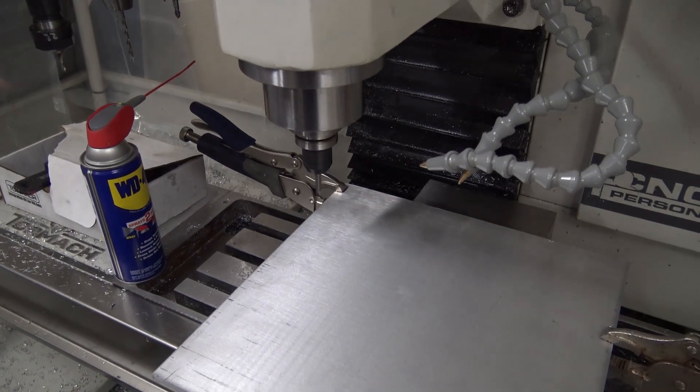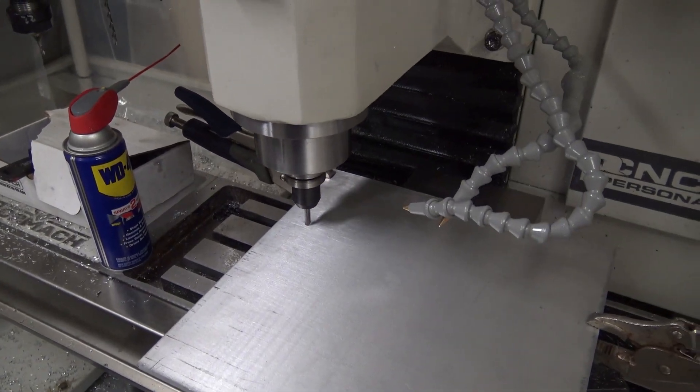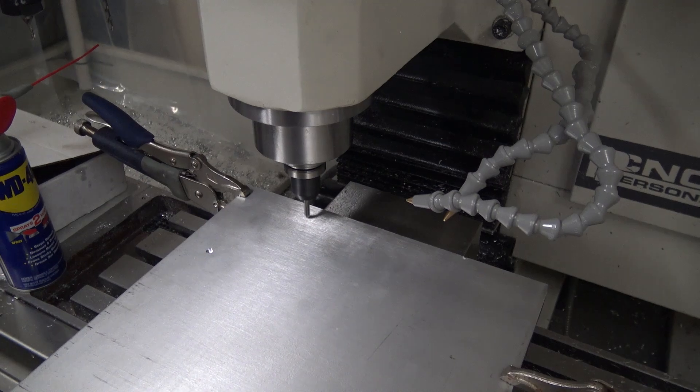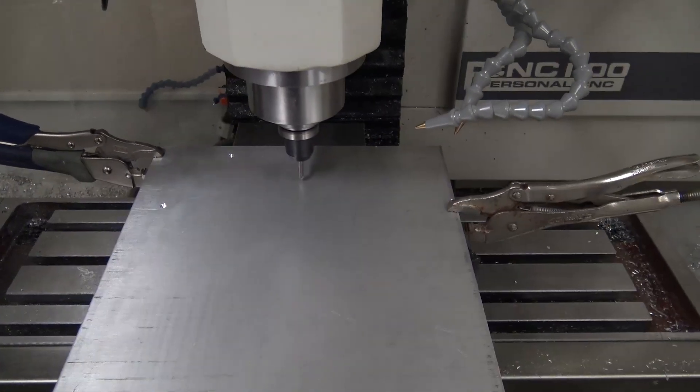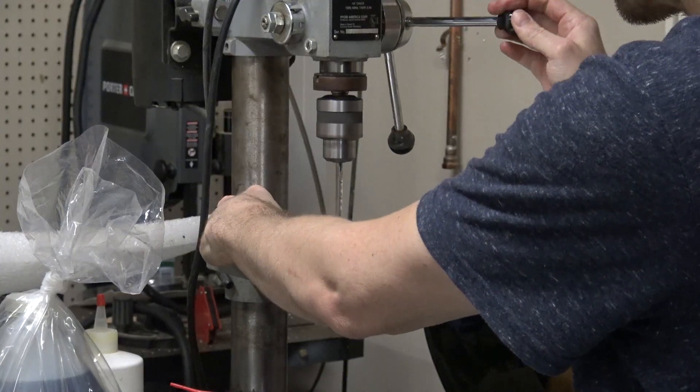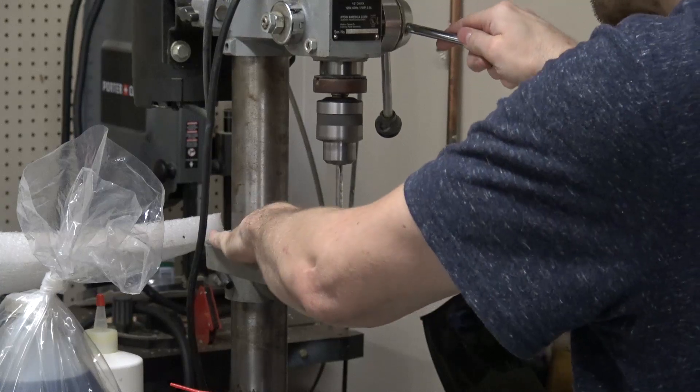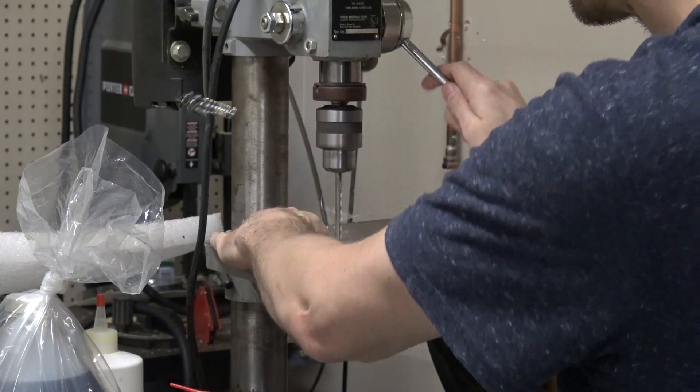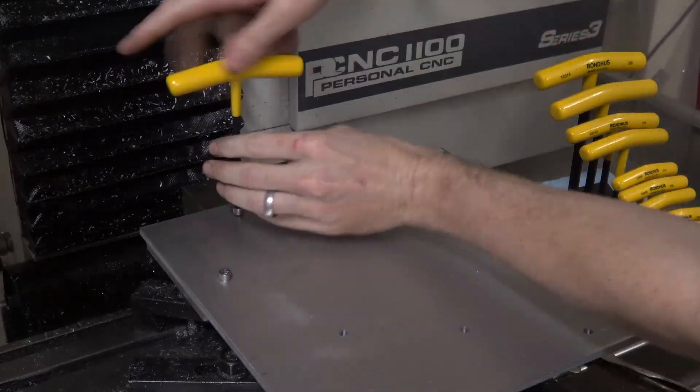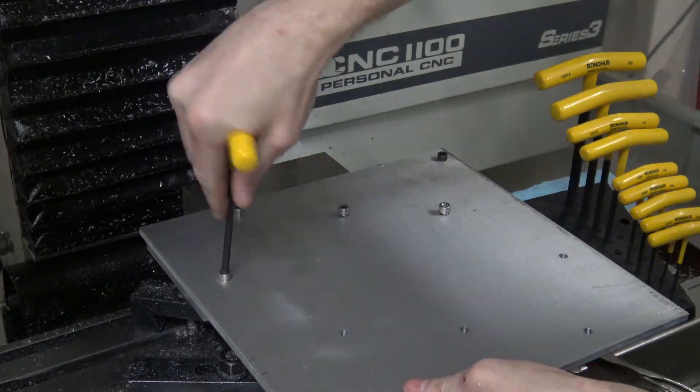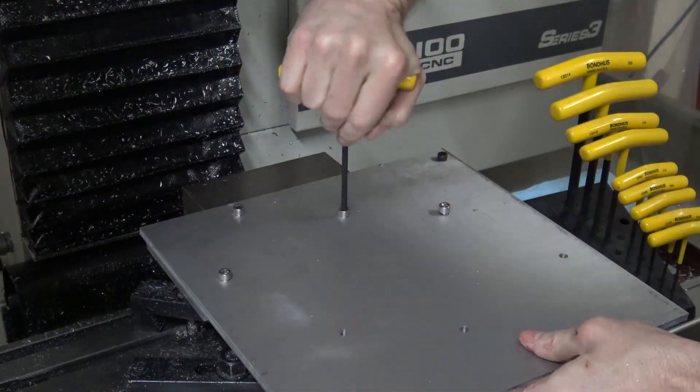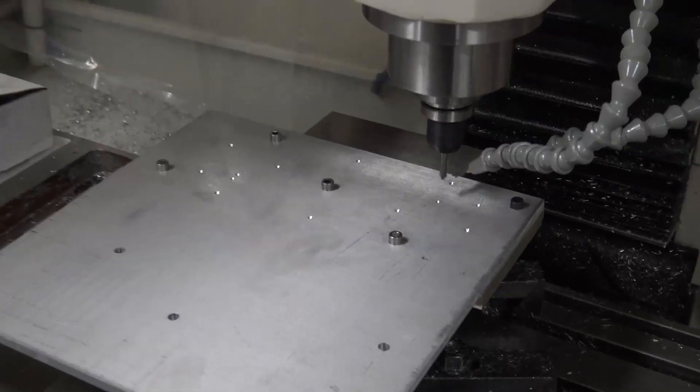Then I just clamped my aluminum stock on, and I used the first part of that last program just to spot the holes. That way I'll know they'll be perfectly aligned. Once that finished, I just drilled them through on the drill press. Here it is perfectly aligned, just snugged up with some quarter-twenty bolts, and started cutting.